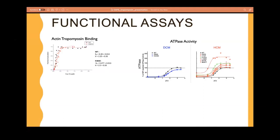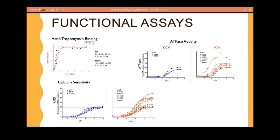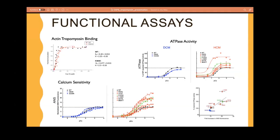Third, calcium sensitivity: E181K with other HCM mutants increases calcium sensitivity. Overall, E181K had a similar phenotype to HCM in both ATPase activity and calcium sensitivity, and was clearly different from wild type and DCM mutations. Through this study we showed that knowledge gained through structural modeling, protein-protein interface interaction analysis, and conserved amino acid study led to a bioinformatic hypothesis that was successfully validated using wet lab techniques.